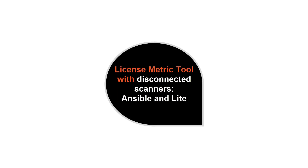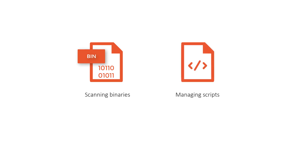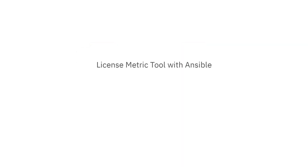LicenseMetricTool with disconnected scanners: Ansible and Lite. The disconnected scanner is an agentless component that consists of scanning binaries and managing scripts. The scripts set up periodic software and capacity scans and creation of packages with scan results by using the system scheduler. Then the packages need to be uploaded to the LicenseMetricTool server.